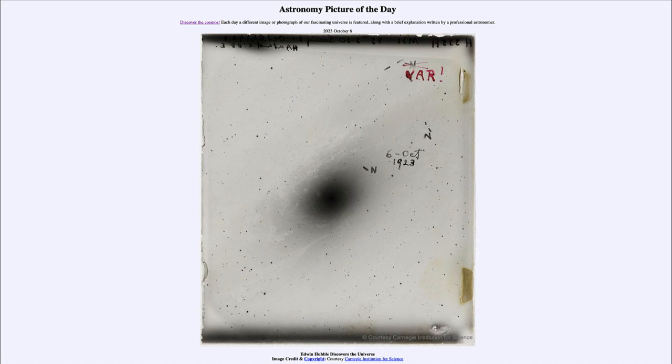So if we know those two, if we know how bright it appears in the sky and how bright it truly is, then we can use those two to calculate the distance to that star and therefore the galaxy itself.